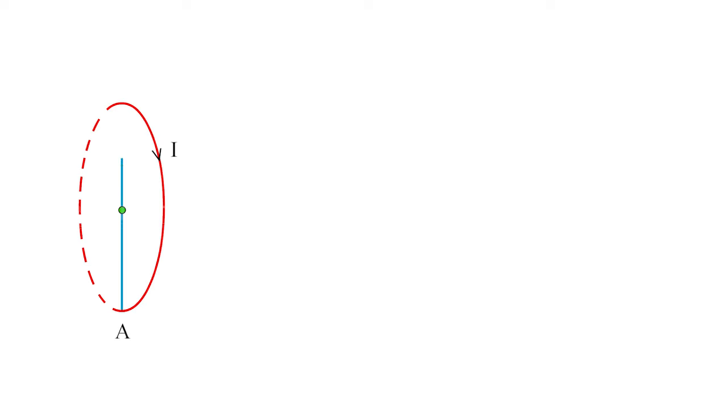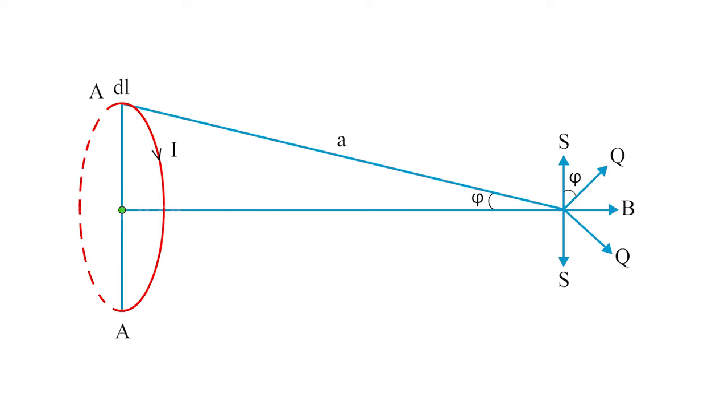From Biot-Savart's law, the total magnetic field at a point which is at a distance x away from the axis of a circular coil of radius R, having n turns, is given by...